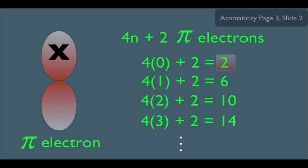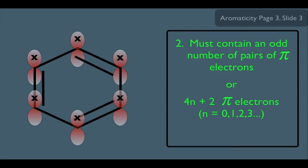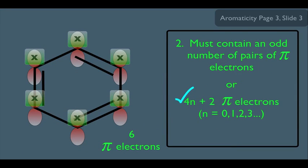Notice this formula generates special numbers: 2, 6, 10, and 14. So for a molecule to be aromatic, it must have 2, 6, 10, 14, or so on pi electrons. Going back to benzene with our p-orbitals shown, if you count the pi electrons: 1, 2, 3, 4, 5, 6. Benzene has 6 pi electrons, which is one of the numbers the formula generates, so benzene also satisfies the second criteria using this alternative method. You can use either one.